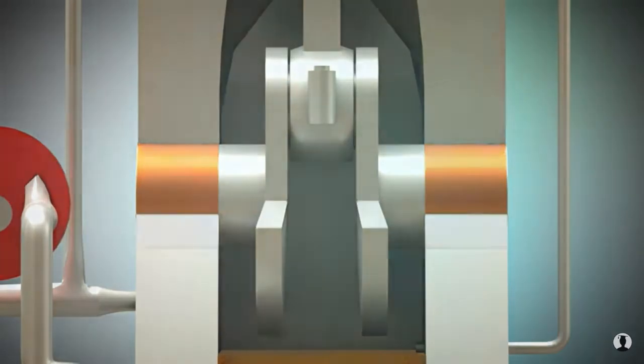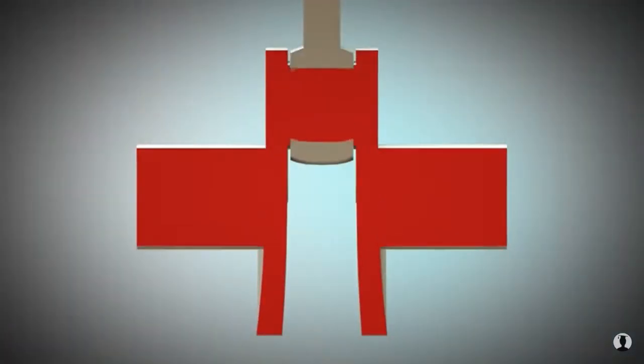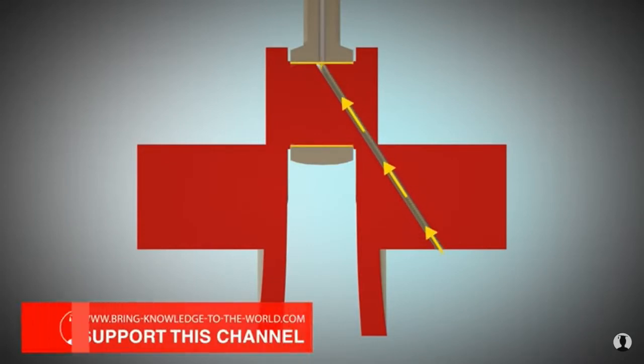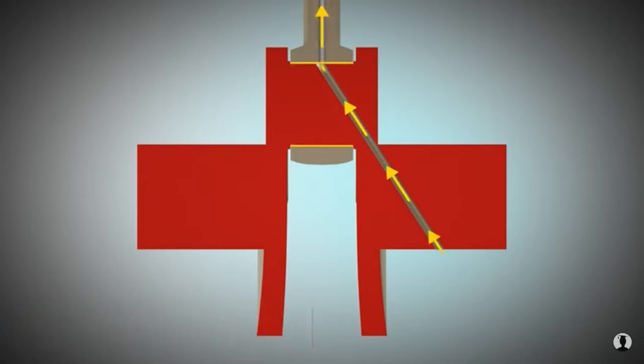The crankshaft has oil galleries so that the connecting rod bearing can be supplied with oil. In diesel engines, the connecting rod can also have an oil gallery to use the oil for cooling and lubricating the piston and the piston pin.